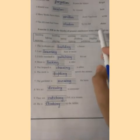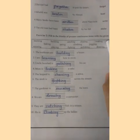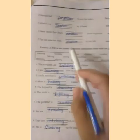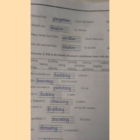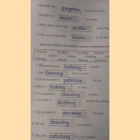Bismillahirrahmanirrahim. Dear students, Assalamualaikum. Today we are going to attempt another page of our summer tasks. Our topic is exercise: fill in the blanks of present continuous tense with the given verbs. The verbs mentioned in the box are basically action words which show an action. Present continuous tense tells us about something which is happening at the time of speaking. For example, right now I am telling you about how to attempt your summer task, so it is in present continuous tense.